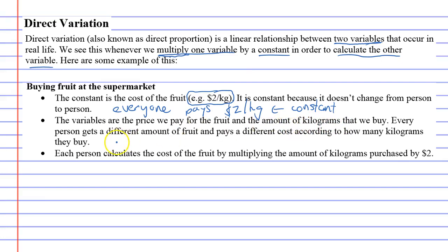Because when you go into the supermarket, you might buy, everyone buys a different amount. So you might go in and go, all right, I'm going to get three kilograms of fruit. This is the amount of kilograms that you get.